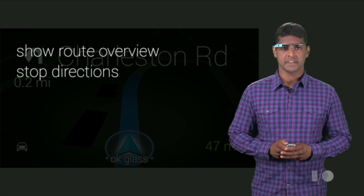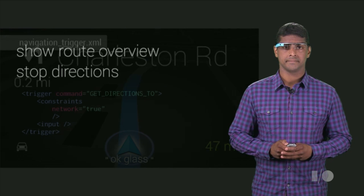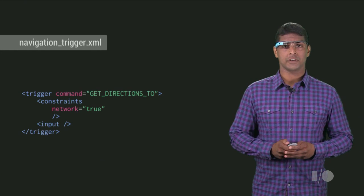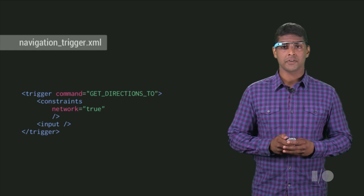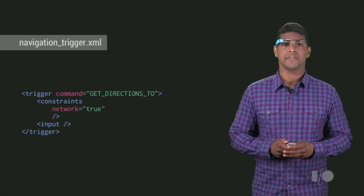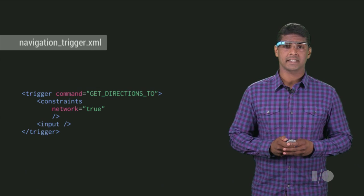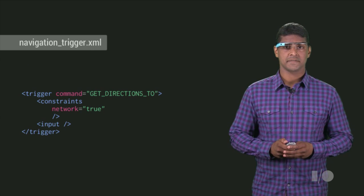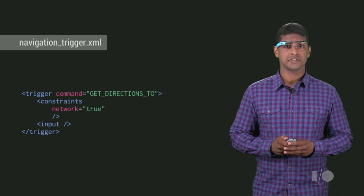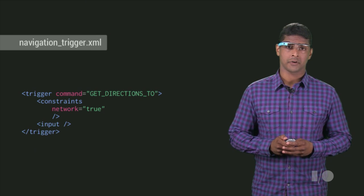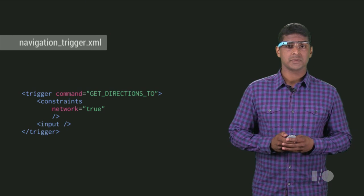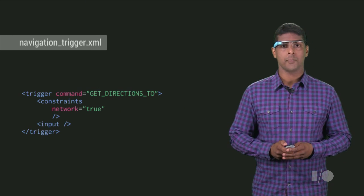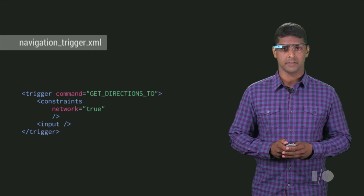Let's dive deeper into both of these APIs. To launch your Glassware from the voice main menu, the first thing you need to do is define a voice trigger XML file. This trigger specifies which command launches your Glassware, what constraints your activity requires, as well as whether your Glassware needs open-ended voice input.